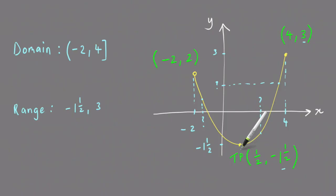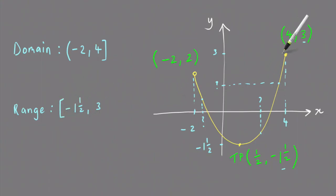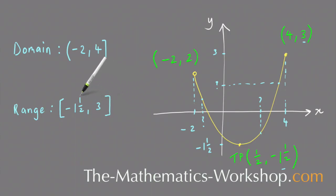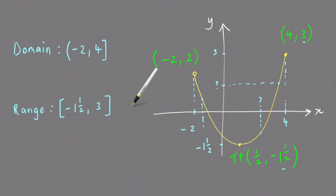Because minus one and a half is included, you use a square bracket. The value where y equals 3 has a colored-in circle, so that's included as well. So the range is the set of y values from minus one and a half to 3 inclusive, and that's how you find the domain and range of a parabola.